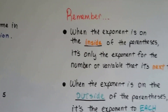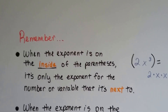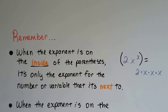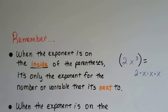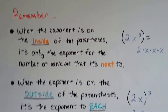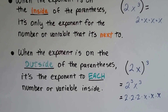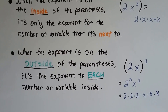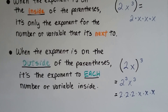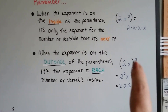What we need to remember is that when the exponent is on the inside of the parentheses, like right here, it's only the exponent for the number or variable it's next to. So 2x to the third power inside parentheses means 2 times x times x times x — it doesn't affect the 2. When the exponent is on the outside of the parentheses, it applies to each number or variable on the inside. So with a third power on the outside, it means 2 to the third power times x to the third power — 2 times 2 times 2 times x times x times x. Inside only affects the one it's next to; outside affects everybody, like the distributive property.